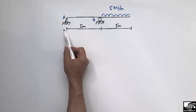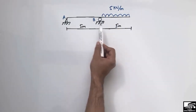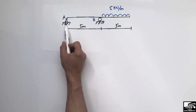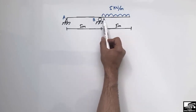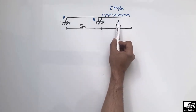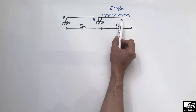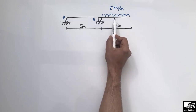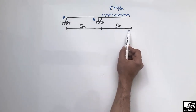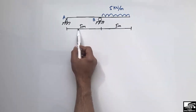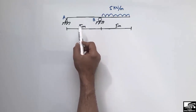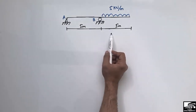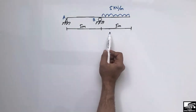In this lecture we are going to find out the support reactions, the shear force diagram, and the bending moment diagram for this beam. This is a beam with two supports: one is the hinge support and one is the roller support. The extended cantilever portion of this beam is loaded with 5 kN per meter distributed load over a distance of 5 meters. The other unloaded portion is also 5 meters, so the total length of the beam is 10 meters.